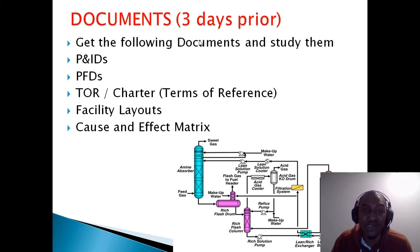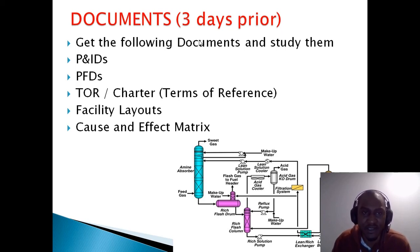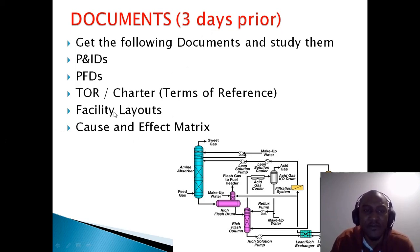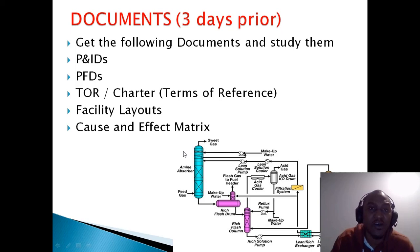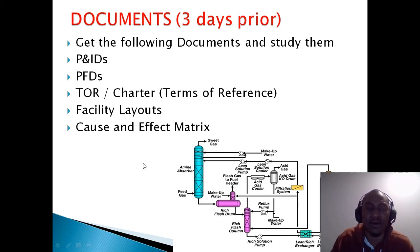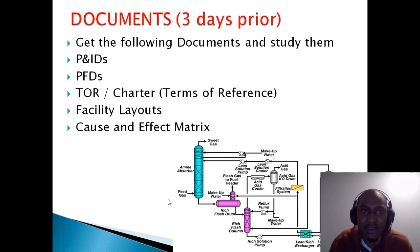It's always good to have a Terms of Reference — something you can go back to. It states what you should do before the HAZOP, how the HAZOP should be run, what happens after, who closes out action comments, and who signs off on each one. Then facility layouts — you might need them briefly, though they're not critically important. The cause and effect matrices are needed because you want to know what triggers a trip or shutdown valve, what causes it to activate, open, or close. Get these documents at least three days before the HAZOP.